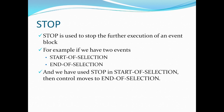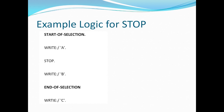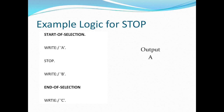For example, if in startup-of-selection we are writing A and B, and in end-of-selection we are writing C, and we have placed the STOP command between write A and write B — while executing, the output will show A, then it will hit STOP. The logic after STOP will be skipped and control moves to end-of-selection, so we will get output C. B will not be written due to the STOP.